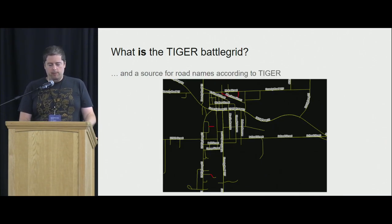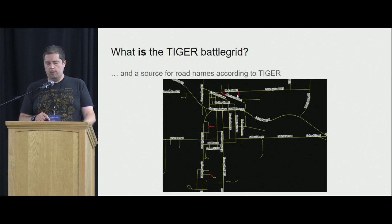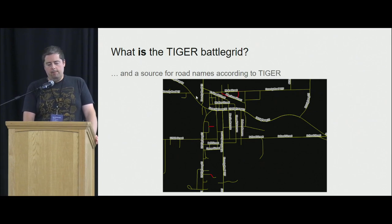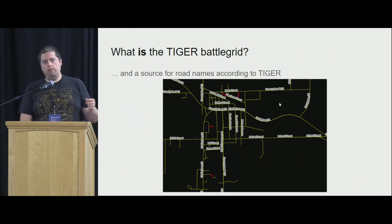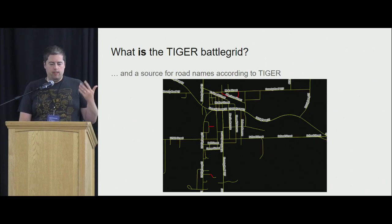If you zoom in, you'll see the yellow areas are OpenStreetMap data that has a match to Tiger data, and the little red areas are Tiger data that does not show up in OpenStreetMap. Many of you may have used this layer just for the names — as part of this process, I also include the name from the Tiger dataset, which is very useful if you spot a new road in satellite imagery but don't have the name for it.